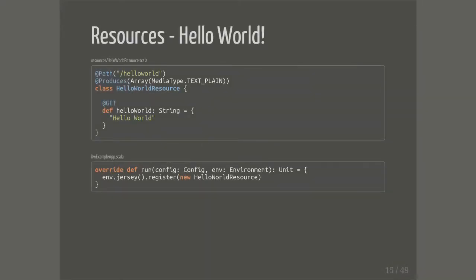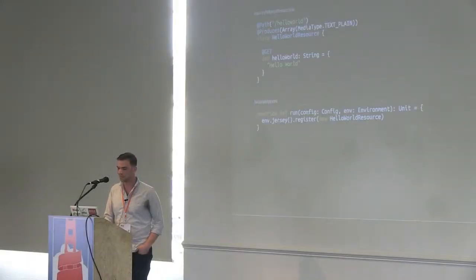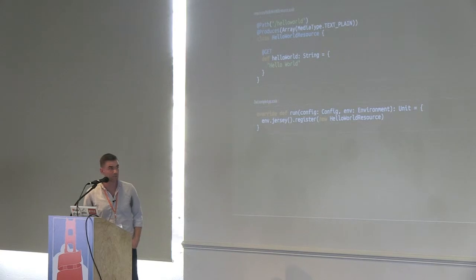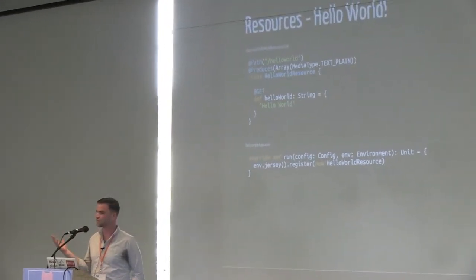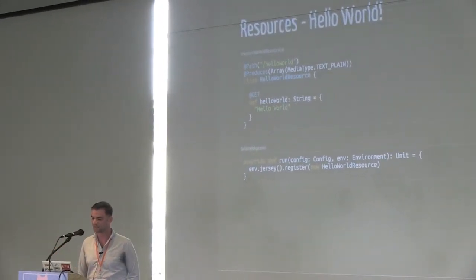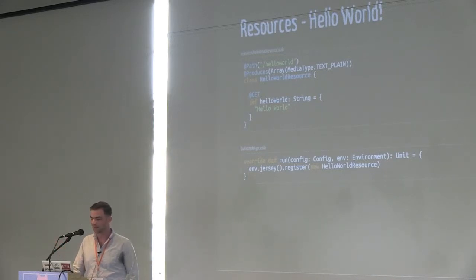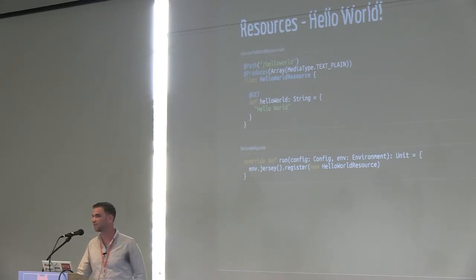Resources are the things that actually connect your actual endpoints that you define and work with. Here's a simple hello world — it's just a class, it produces text/plain, and I've got one method on it which is a GET. As you can see, I just return a string, hello world. Very simple.